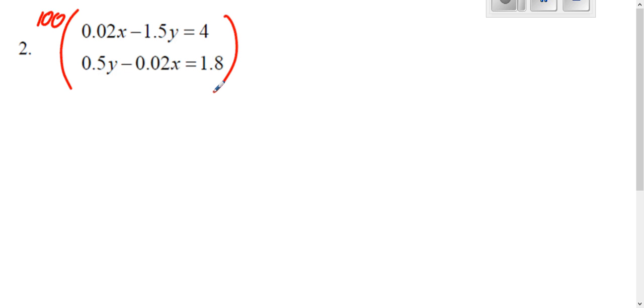When you multiply everything by 100, really all that does is move the decimal two spots. So when you move the decimal two spots, you get 2x. Move the decimal two spots, you get 150y, and then move the decimal two spots, you get 400.